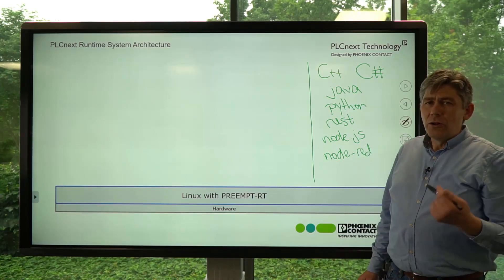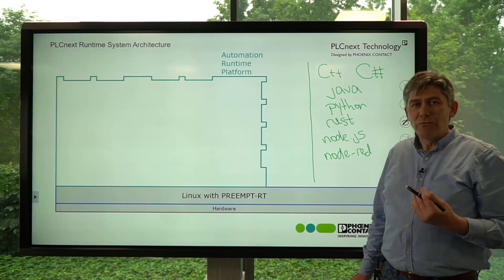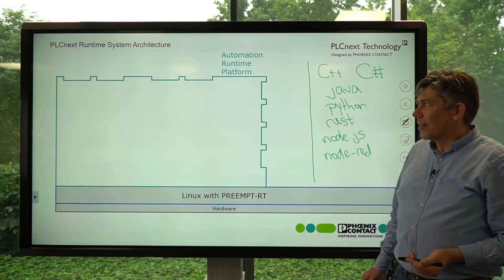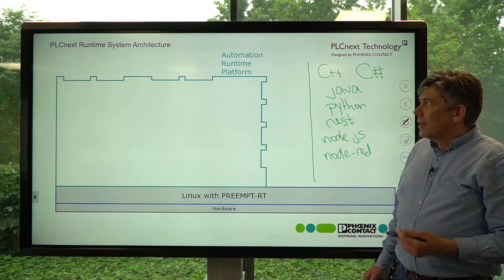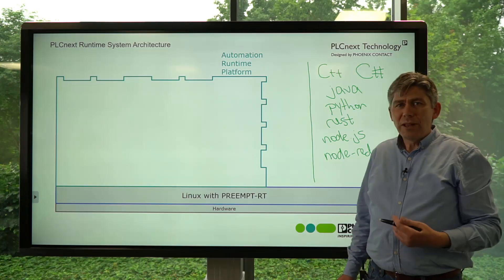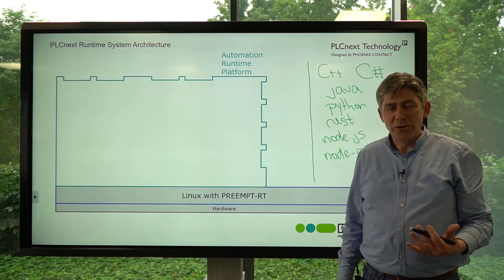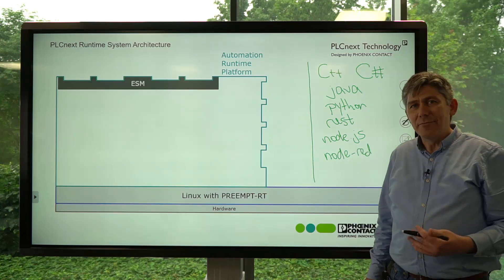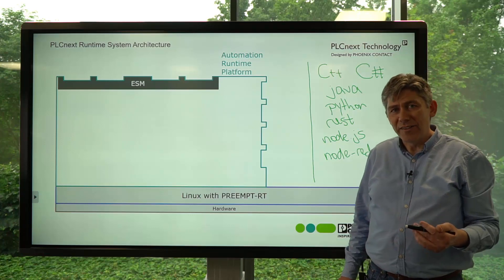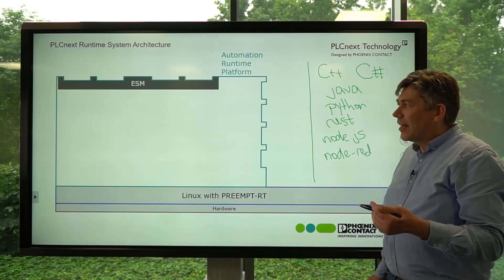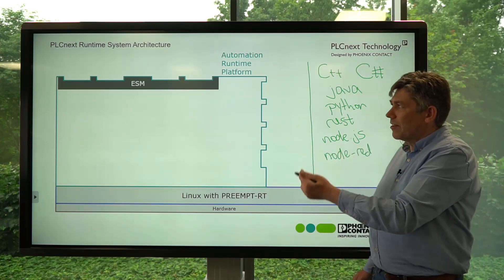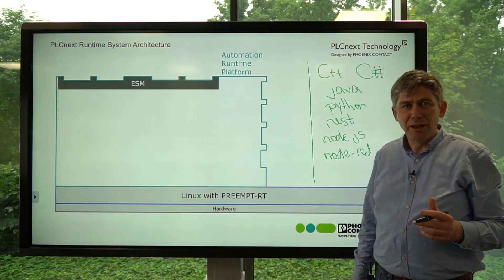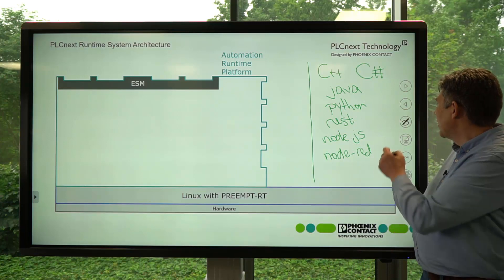But each PLCnext control also comes with an Automation Runtime Platform, and this is started up when the operating system starts. Inside the Automation Runtime Platform is a whole set of components. The first component I'll speak to you about is the ESM — the Execution and Synchronization Manager. This allows us to run deterministic real-time programs without having to worry about all the operating system level details of how to do that.